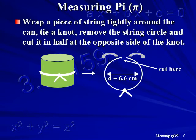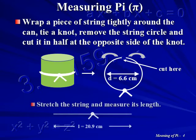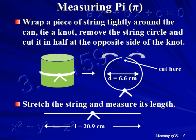Now cut it in half at the opposite side of the knot. In the example shown in the diagram, the diameter of the can, D, is 6.6 centimeters. Stretch the string and measure its length. In the example shown in the diagram, the length, L, is 20.9 centimeters.